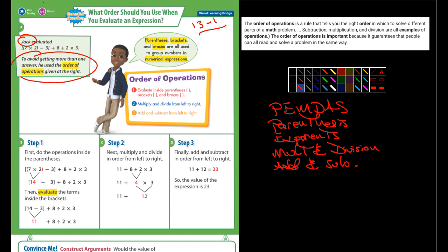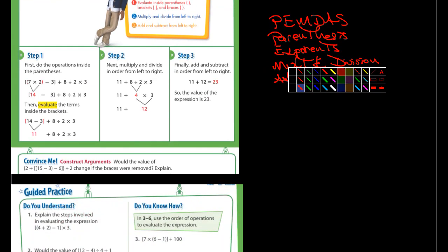In this very first page here, they give us an example, step one, two, and three. You always do the operations inside the parentheses first. Here's this problem right here. It looks like it's 7 × 2 - 3 + 8 ÷ 2 × 3. Let me just write that here for a moment.